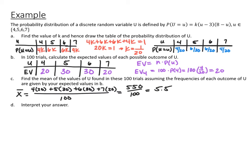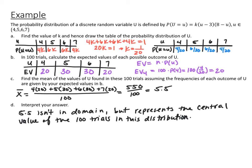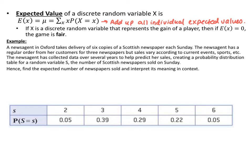The mean of 5.5, even though it's not in the domain, represents the central tendency of the 100 trials in this distribution. The expected value of a discrete random variable is E(X) = μ = Σ x·P(X = x). Find the expected value for each outcome, add them all up, and that is the expected value for the entire discrete random variable.